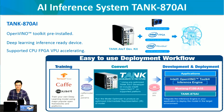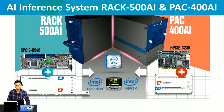Once you pair the TANK-870AI with the Mustang F100-A10 card, you can start your deep learning inference right away. The RIG-500AI is designed for full-size deep learning accelerators such as the NVIDIA Tesla series, while the PET-400AI is designed for half-size acceleration cards such as the Mustang F100-A10. Both series provide four PCIe slots.